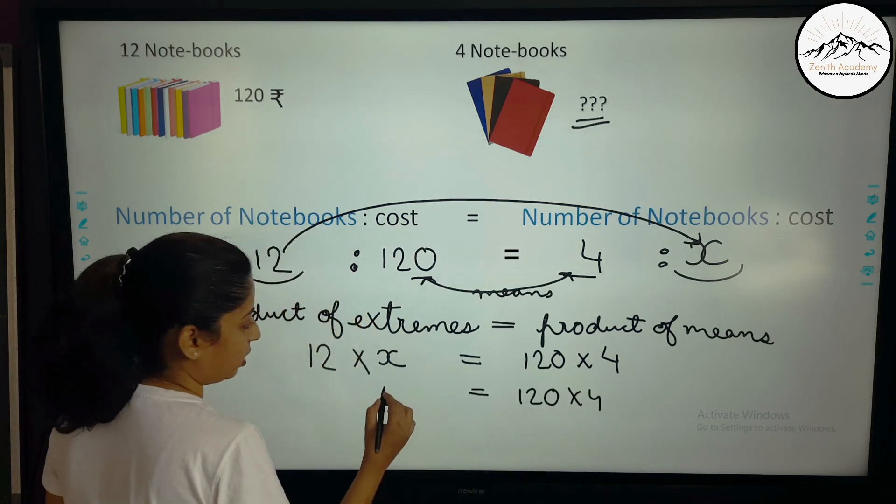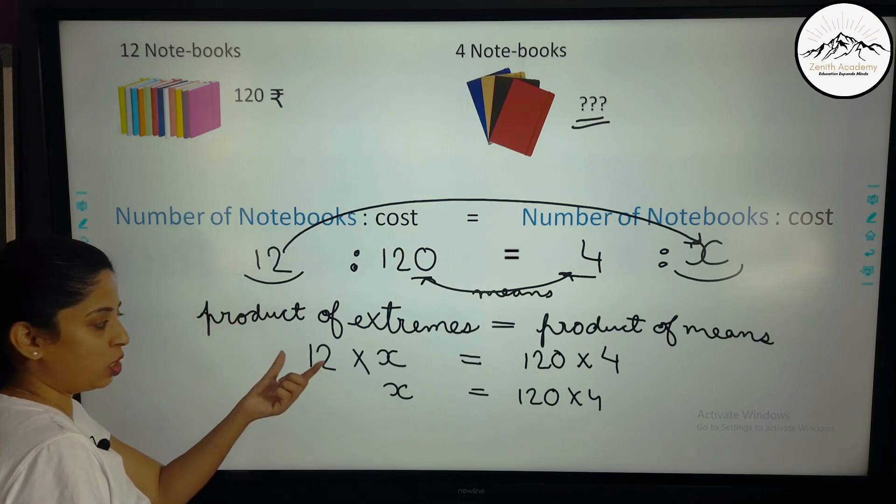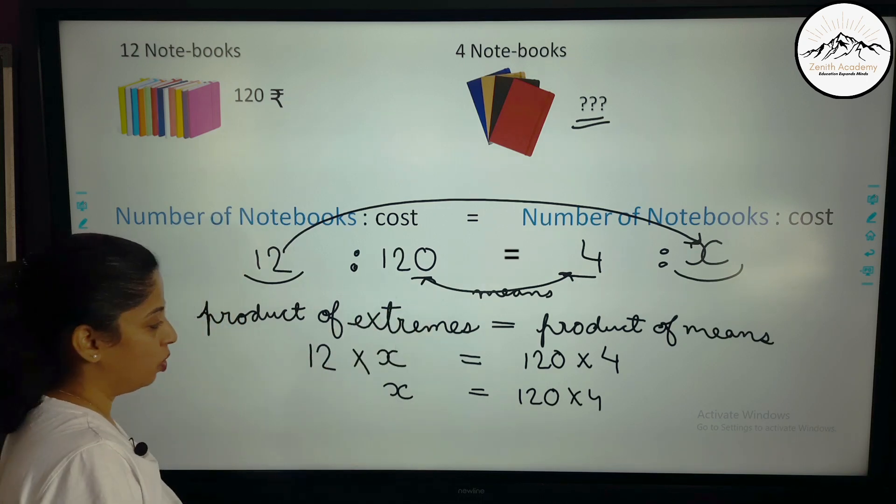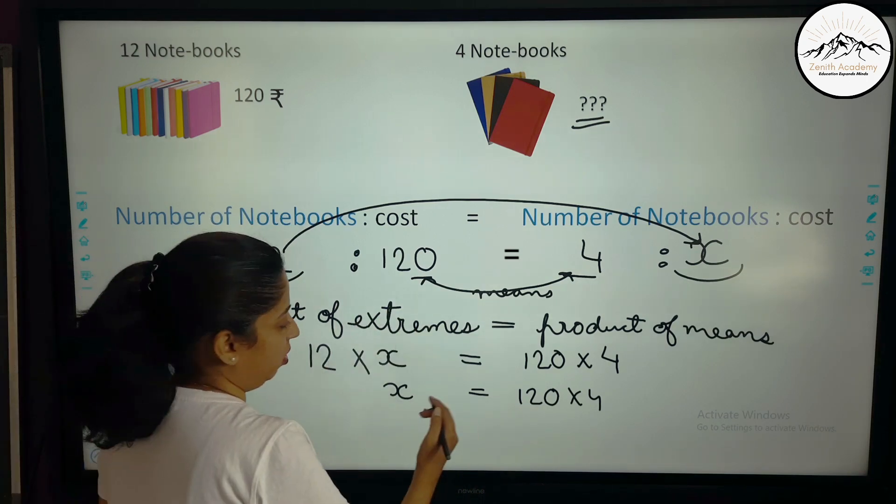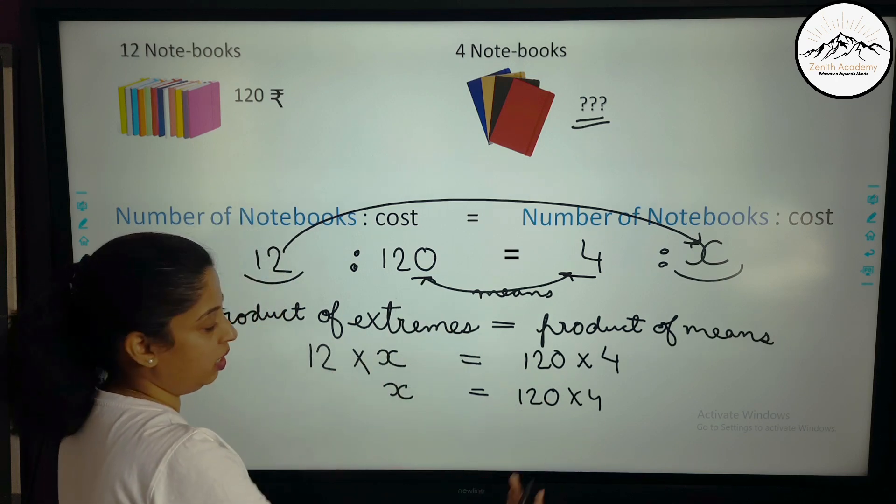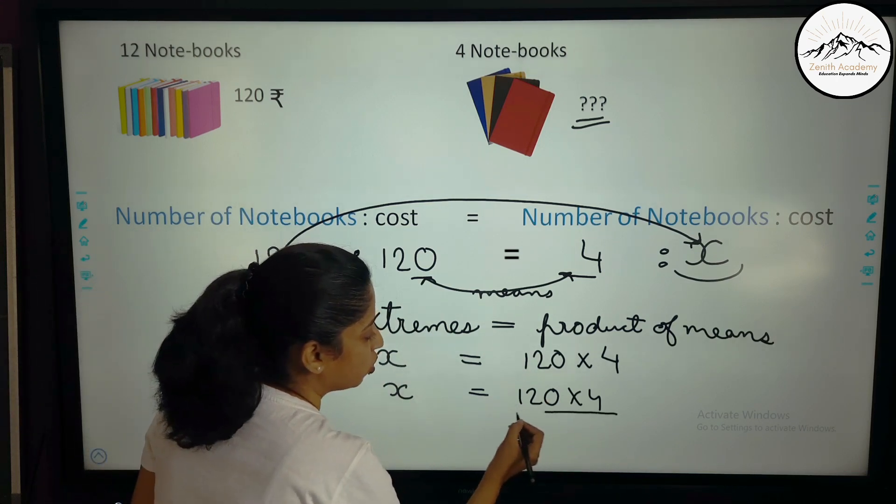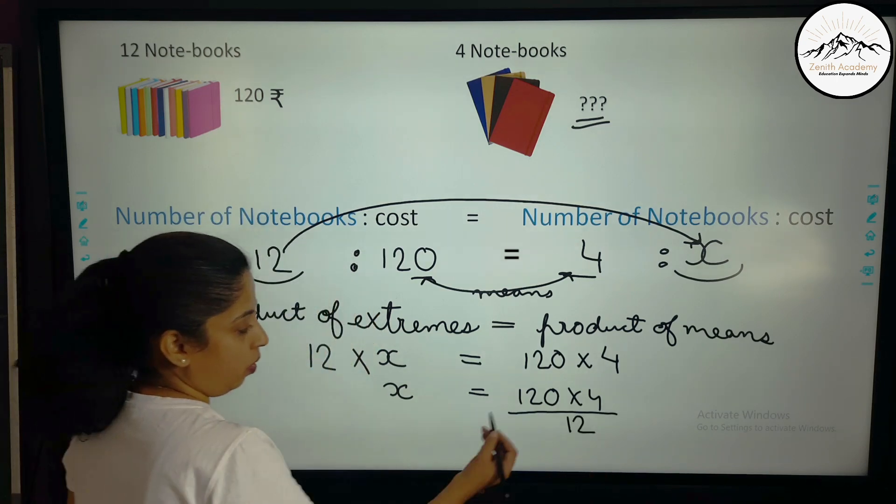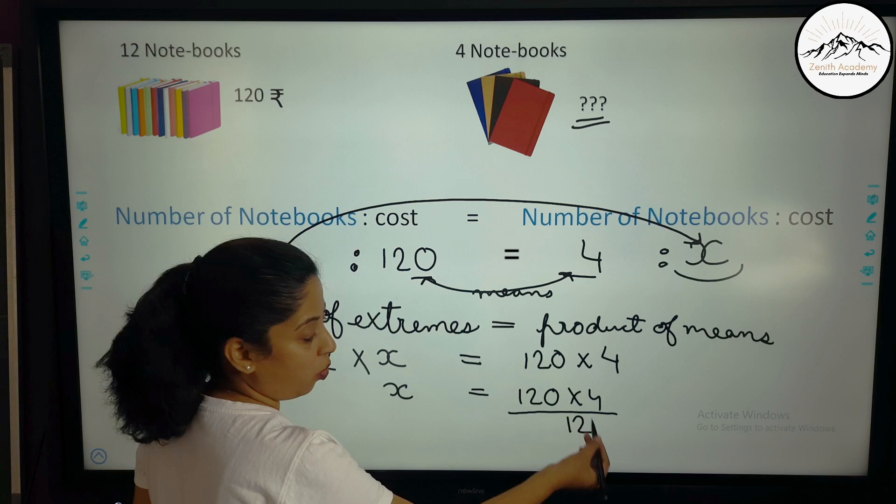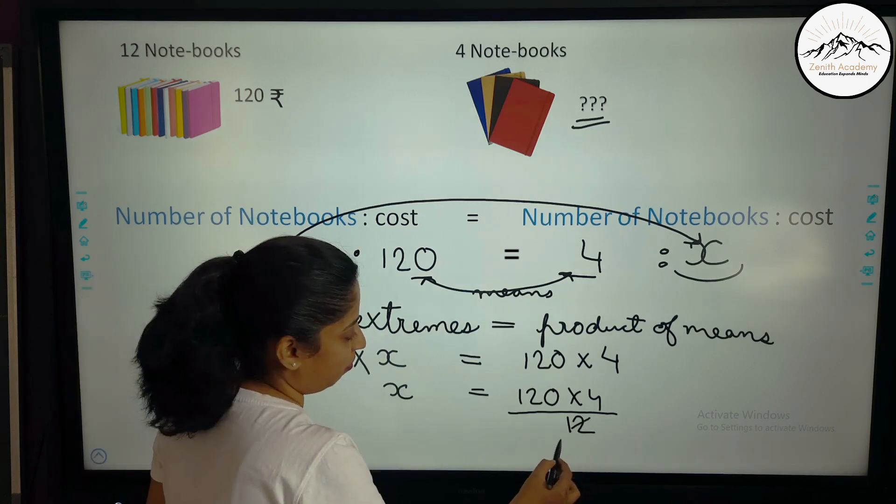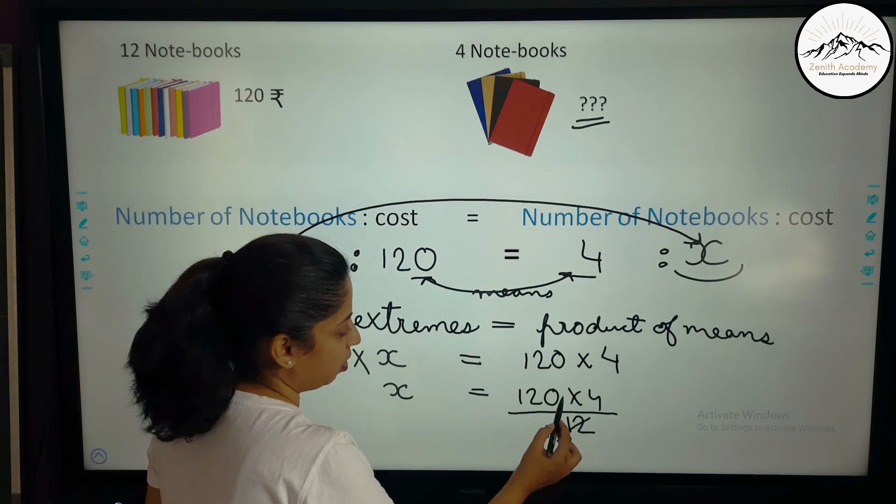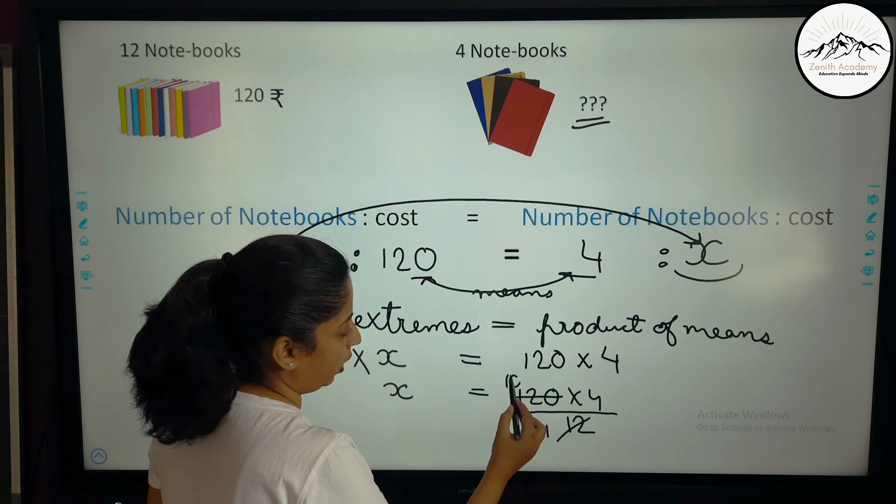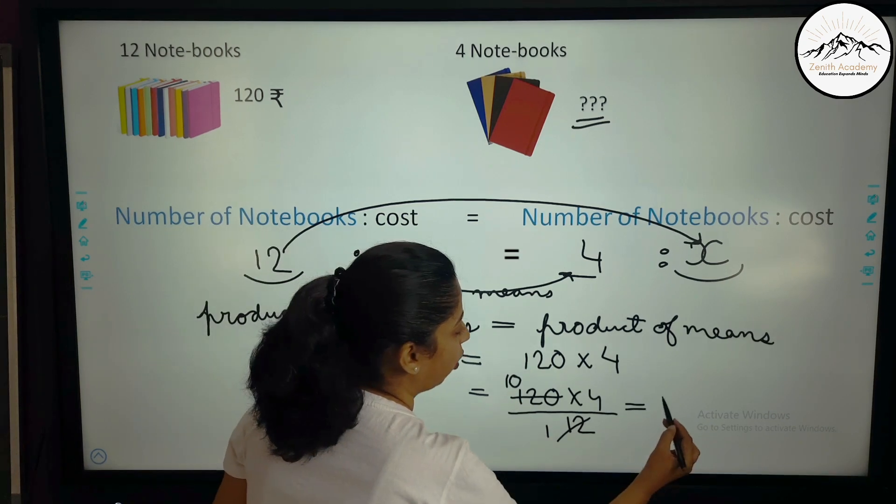So I will write this as it is 120 into 4. And I want x. So I will have to transpose this 12 on the other side. So here it is multiplication. So when it goes on the other side of equal sign, it will become division. So I will say 12 here. So I have got this. Now you have to solve it. Easiest simplifying. So 12 ones and 12 tens is 120. So 10 into 4 is 40 rupees.